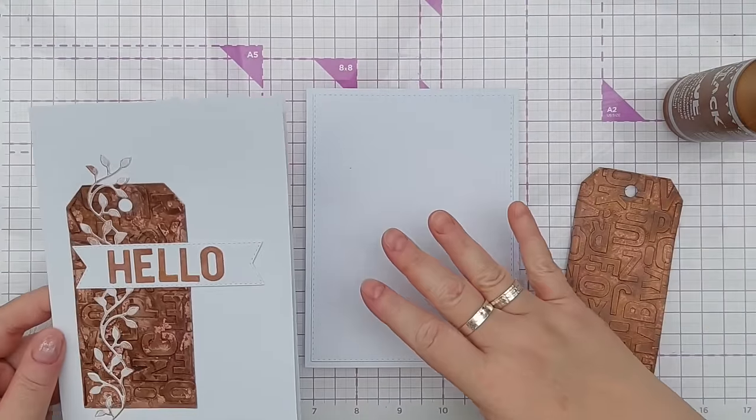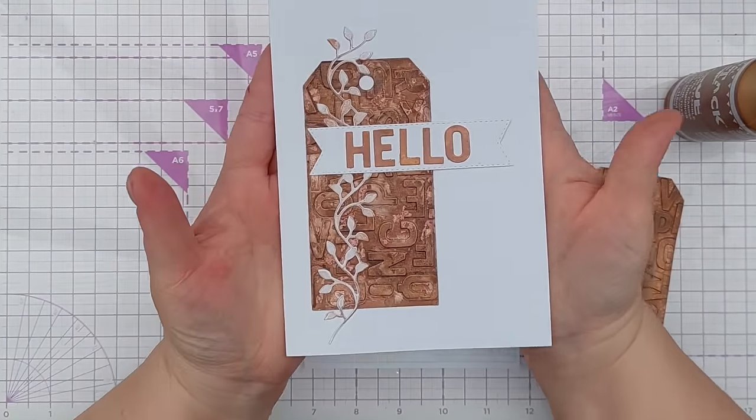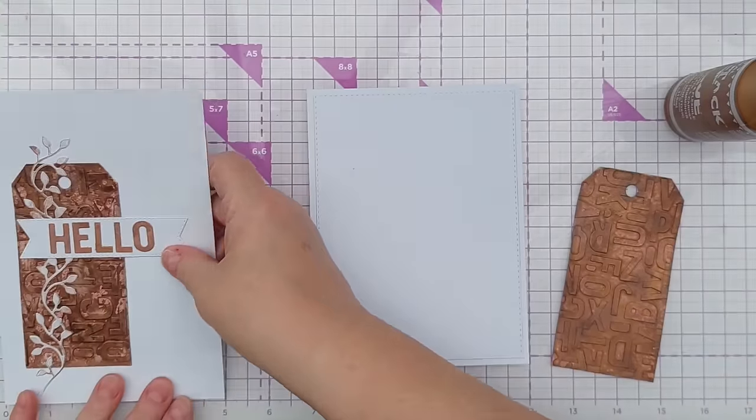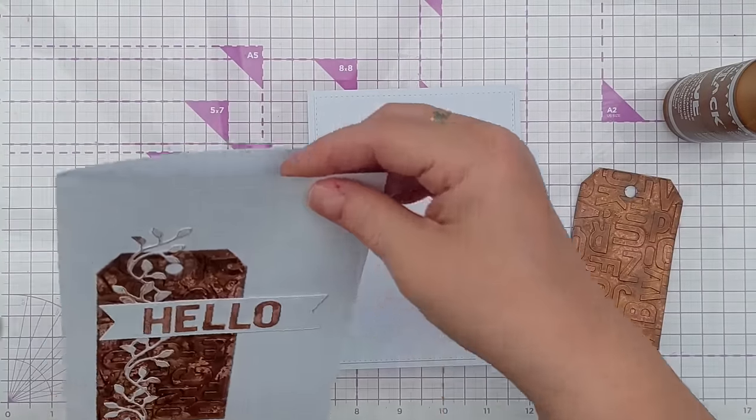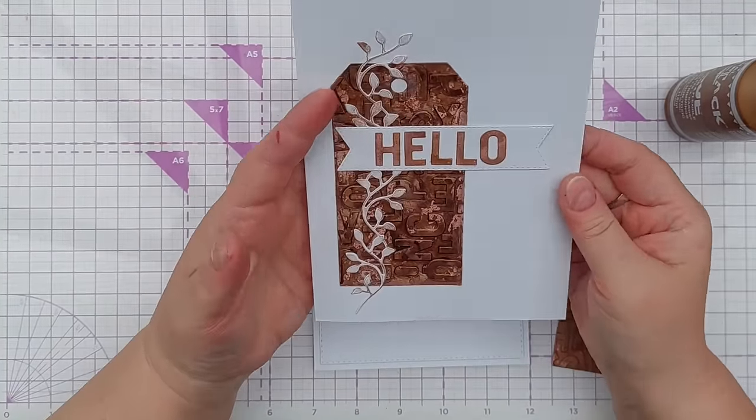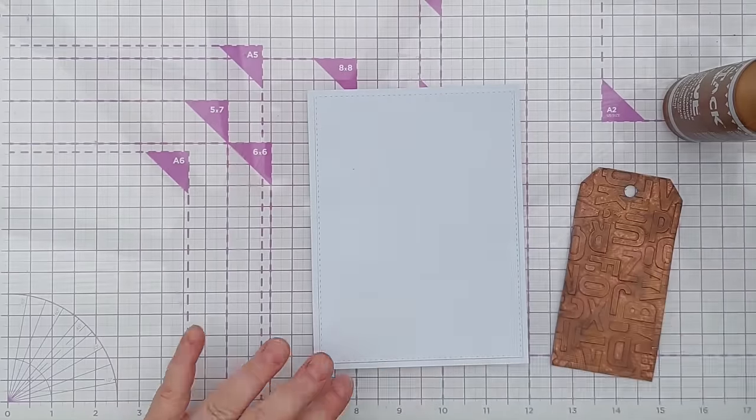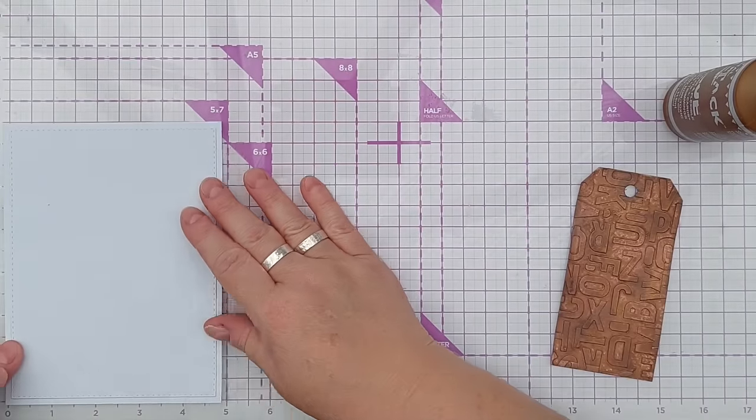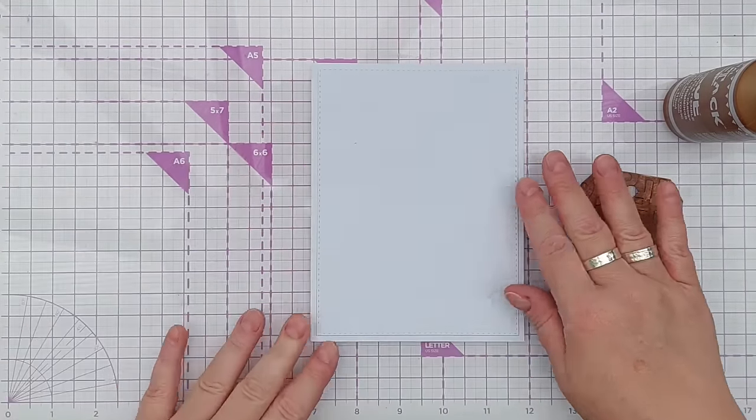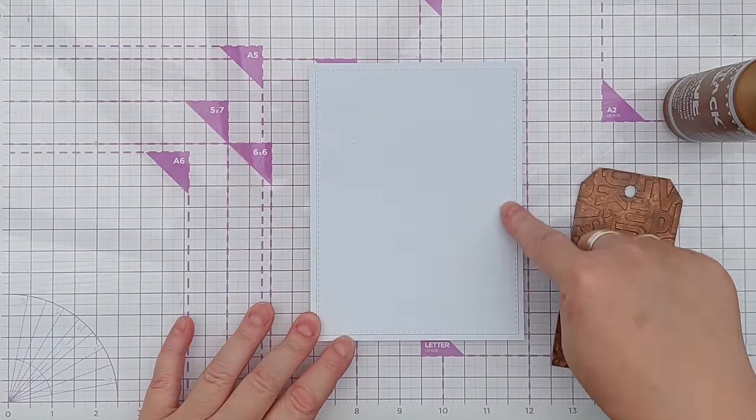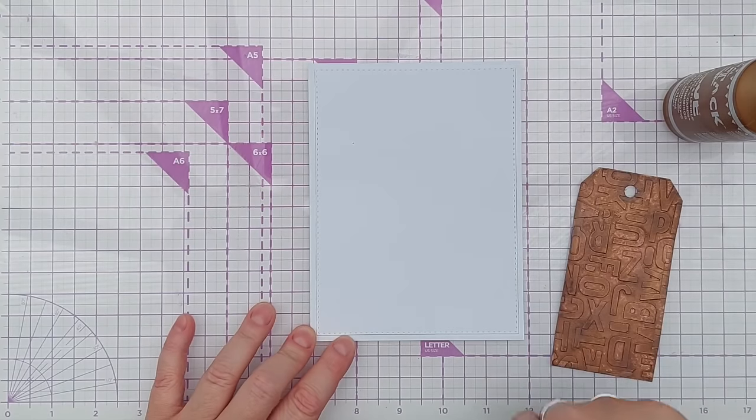So I'm ready to stick my tag down. This card that I made yesterday is about five by seven and a quarter inches and it's a little bit big I think. So I've made this one which is five by six and a half and I've added a panel of smooth white cardstock that I cut with a stitched rectangle die.